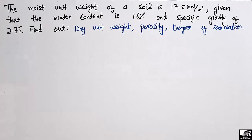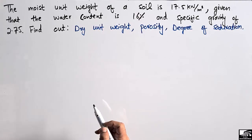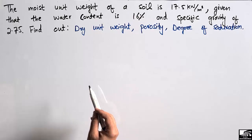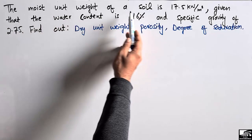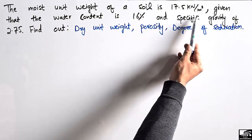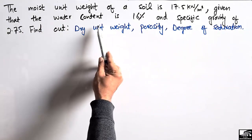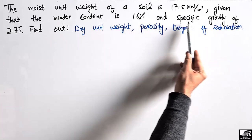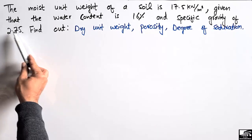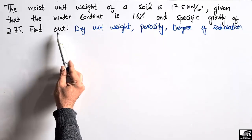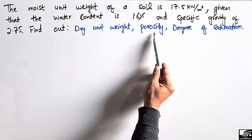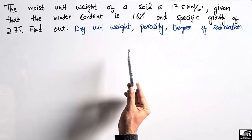Hello guys, welcome back to AC1 Engineering YouTube channel. Please subscribe to our channel for daily AC1 Engineering videos. Today's lecture is about soil mechanics. In this lecture we are going to find out some unknown parameters for the soil. The problem states that the moist unit weight of a soil is 17.5 kN per cubic meter, the water content is 16%, and the specific gravity is 2.75. We have to find out the dry unit weight, porosity, and degree of saturation for this soil sample.